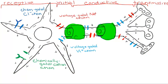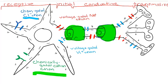Why are each of these segments different? They're different because of their functions, and their functions are different because each segment has separate, different channels. In the receptive segment, we have chemically gated cation channels, and up here we also see chemically gated chloride channels. These are chemically gated channels, meaning that in order for them to open, we need a chemical key — most likely a neurotransmitter.